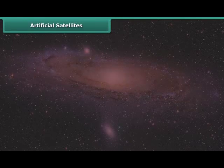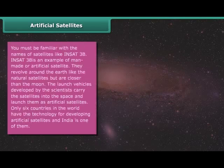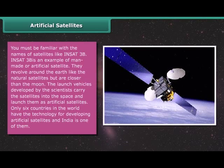INSAT-3B is an example of man-made or artificial satellite. They revolve around the earth like the natural satellites but are closer than the moon. The launch vehicles developed by the scientists carry the satellites into space and launch them as artificial satellites. Only six countries in the world have the technology for developing artificial satellites and India is one of them.